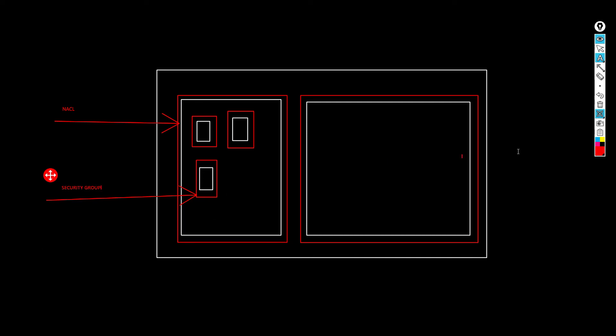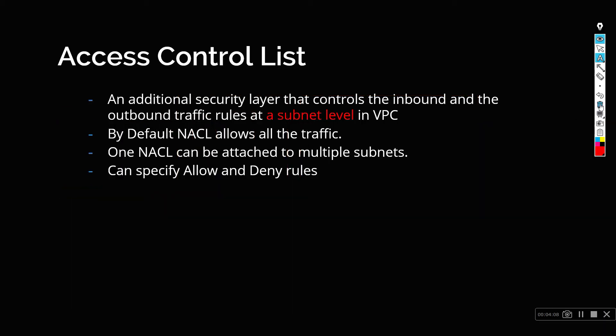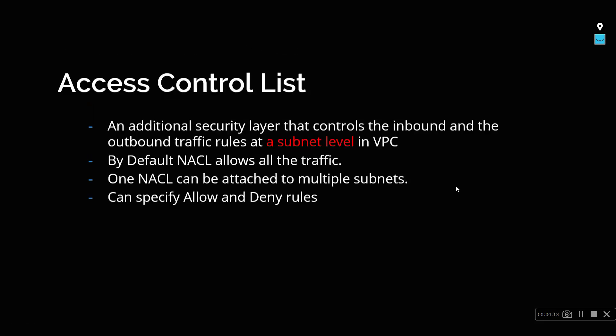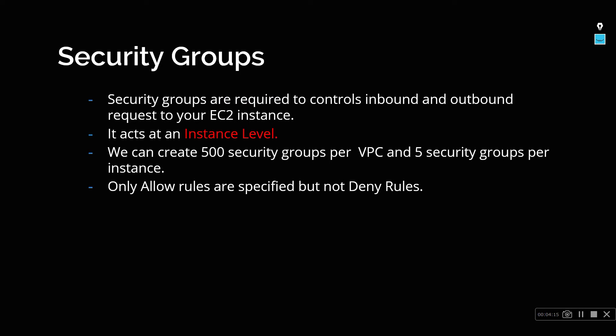Security groups are required to control the inbound and outbound requests to your EC2 instance — it basically governs all incoming and outgoing requests and how you can handle them. Security groups operate at the instance level, not the subnet level, so you need to associate a specific security group to each EC2 instance.